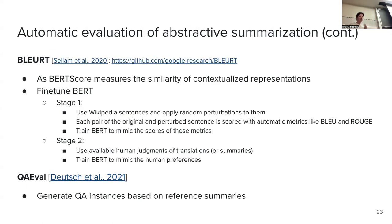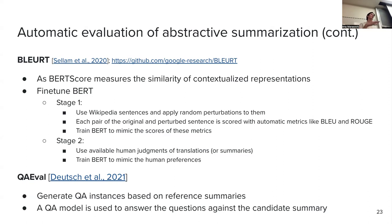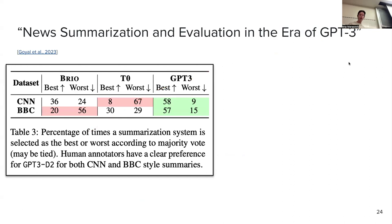Any questions about these measurements? Remember: if you open a recent paper, people report all of these — not just ROUGE. You report ROUGE, BERTScore, and BLEURT. If according to all of them your model generates a better summary than another method, or even better if human evaluation says so, then you're good to go. I want to go over a few more recent works.